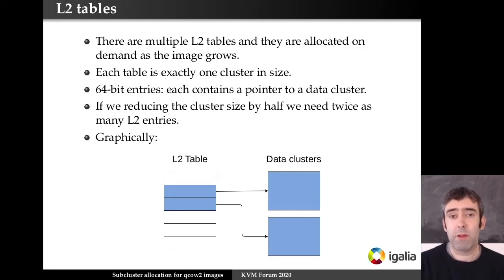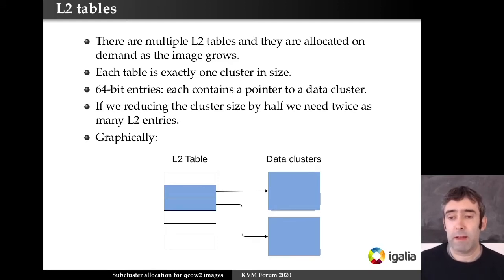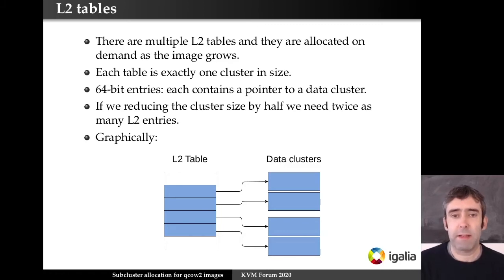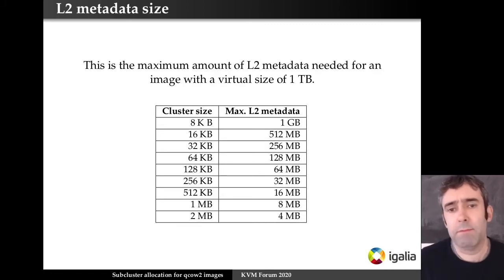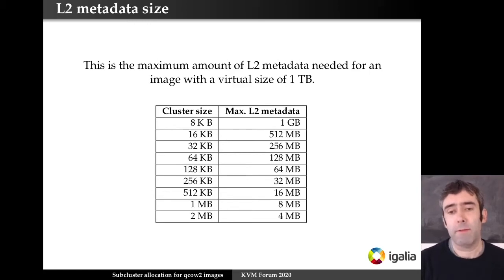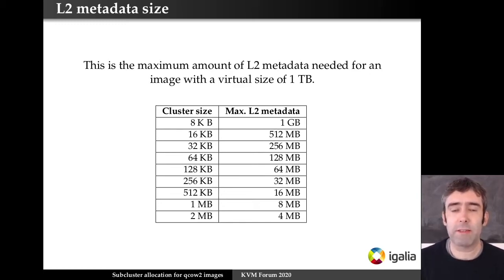If we reduce the cluster size, we need more L2 entries. Graphically, if we have two clusters and make them twice as small, we get four clusters and need four entries — so half the cluster size means twice the metadata. As shown in the table, if you reduce the cluster size by half you increase metadata by two, which is a very big difference. So choosing the right cluster size has a very big impact on the amount of metadata in an image.